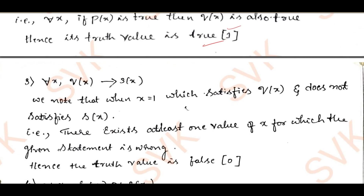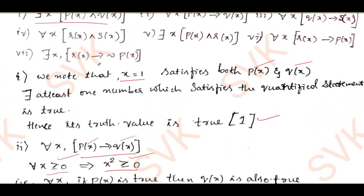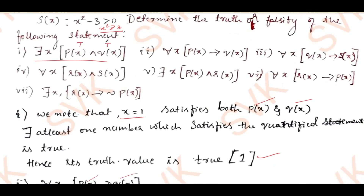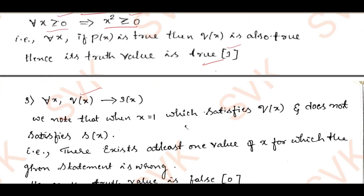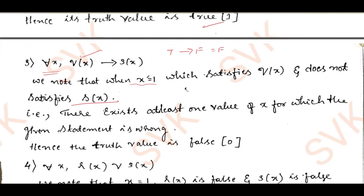Moving on to the third: for all x, q(x) implies s(x). We observe that for x = 1, q(x) satisfies since 1² is positive. However, s(x) is x² − 3 > 0, which does not satisfy for x = 1. So s(x) is false. True implies false is always false. Since 'for all' requires satisfaction for all values, and x = 1 does not satisfy, the given proposition has truth value false.